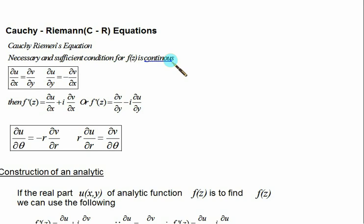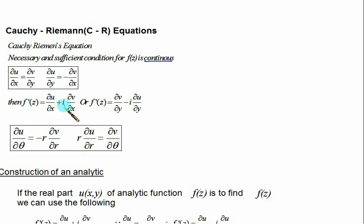The Cauchy-Riemann equations are: ∂u/∂x = ∂v/∂y, and ∂u/∂y = −∂v/∂x. If you satisfy these two conditions, we can conclude the function is continuous and hence analytic — meaning it can be differentiated as well as integrated. To find the derivative of the function, use the definition: f'(z) = ∂u/∂x + i·∂v/∂x.